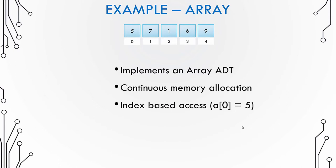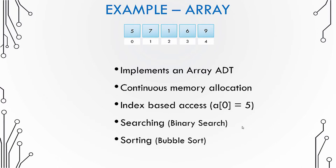In C language, a[0] will give you 5, a[2] will give you 1, and a[4] will give you 9. Based on the index you can access an element inside the array. You also talk about an implementation of operations. For an array you can have searching and sorting. To implement searching you can use binary search, linear search, or any other search. For sorting, you might use bubble sort.